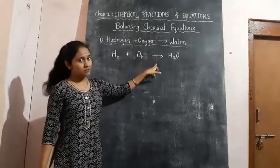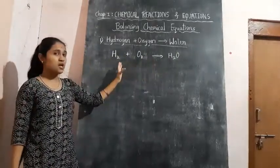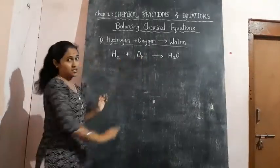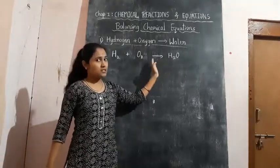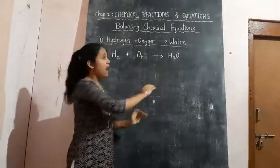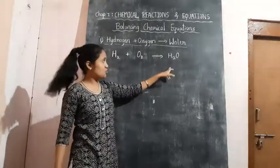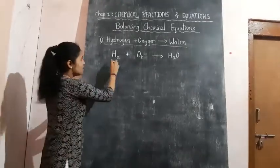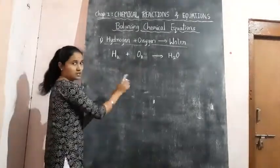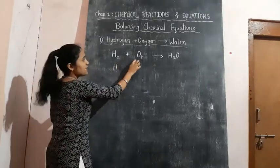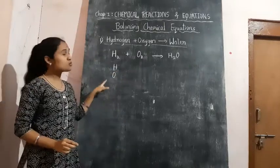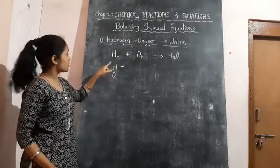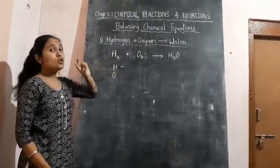Now here there is an arrow mark, and the elements and compounds before this arrow mark are known as reactants. So H₂ and O₂ are the reactants here, and the compound on the right side after this arrow mark is known as a product. H₂O is the product here. First we need to write the number of atoms of each element. In the reactant side, hydrogen and oxygen are present — only these two elements. Let us count the number of atoms of hydrogen.